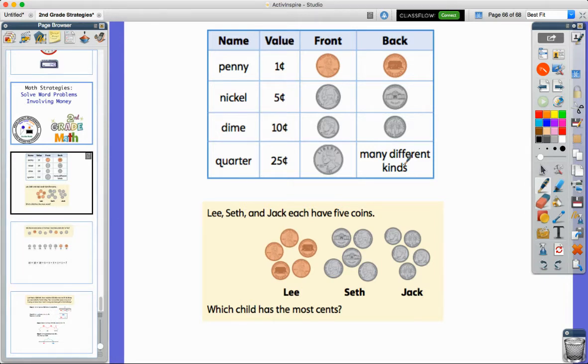Now let's look at this problem. Lee, Seth, and Jack each have five coins. We see the five coins that they have, all different ones, and it asks which one has the most cents or the most money. These are pennies and each one of them is worth one cent, so Lee only has five cents.